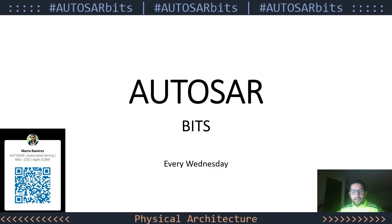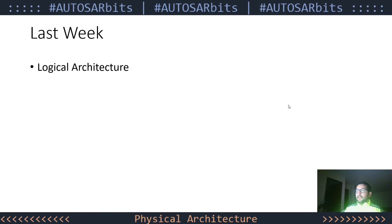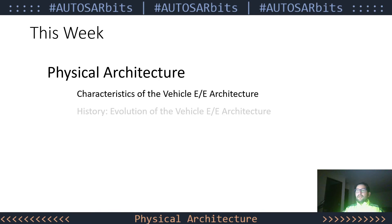Hey everyone, welcome to another session of Autosar Beats. My name is Marco and at the moment we're explaining what the system architecture is for Autosar. Last week we went through the logical architecture and the functional architecture. Now in this session we're going to focus on the physical architecture and its characteristics.